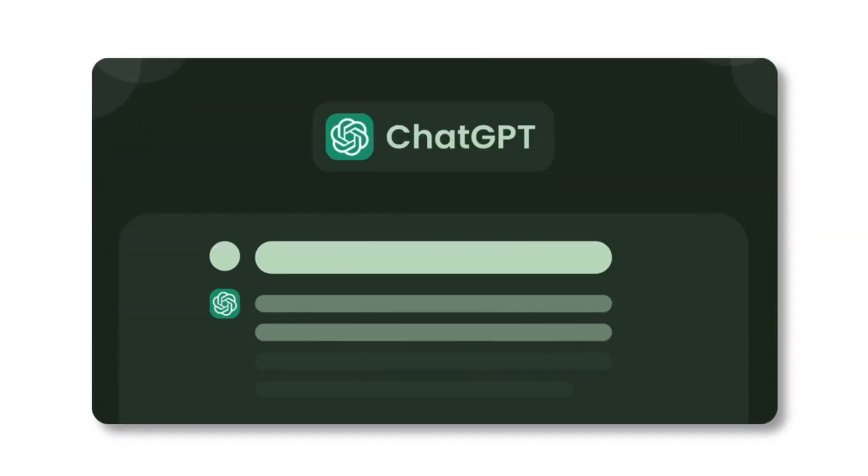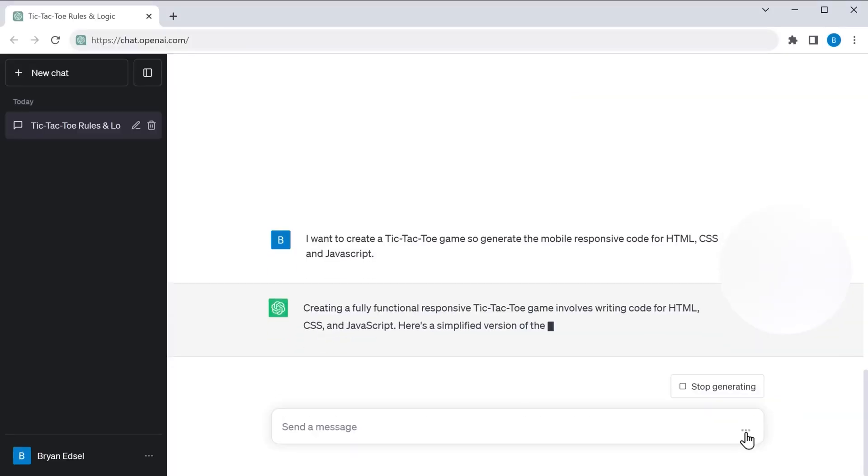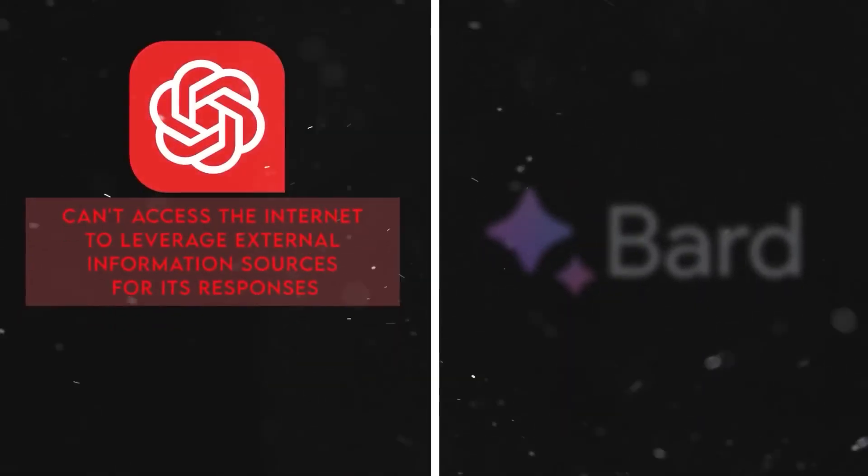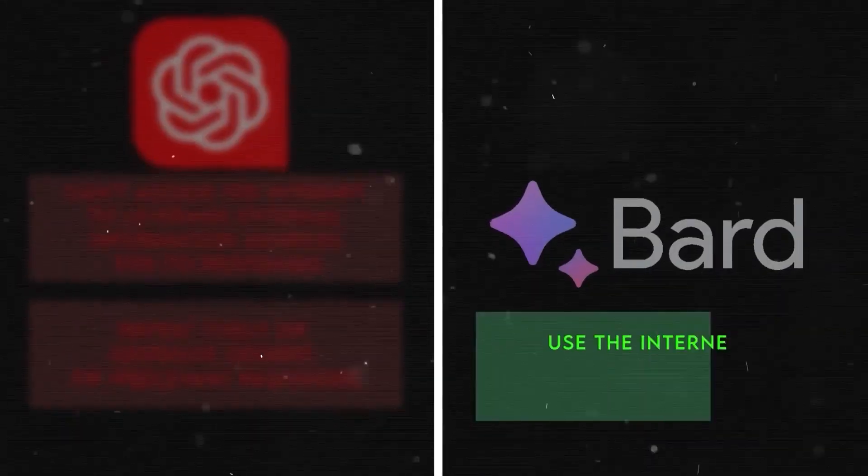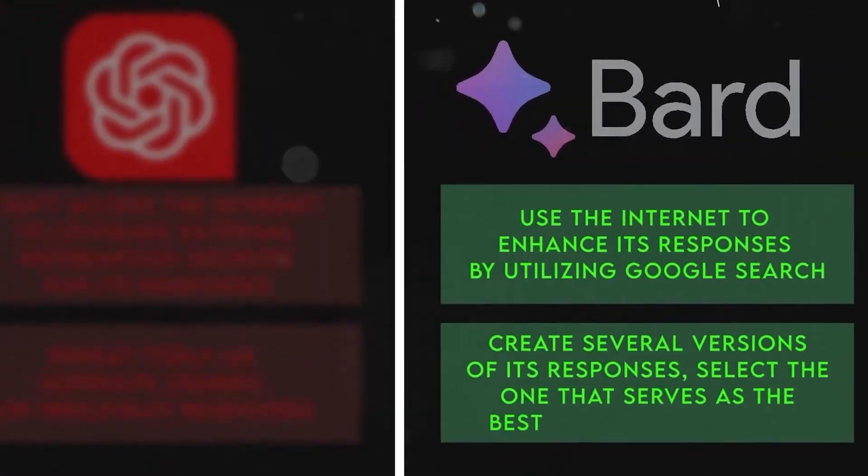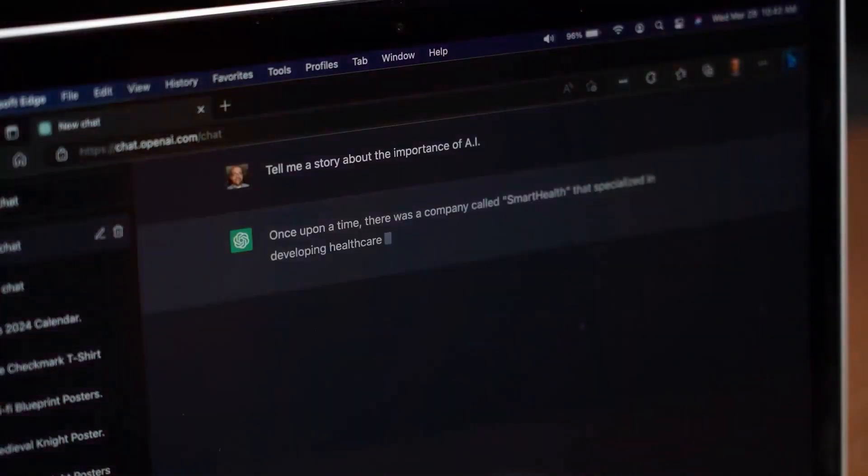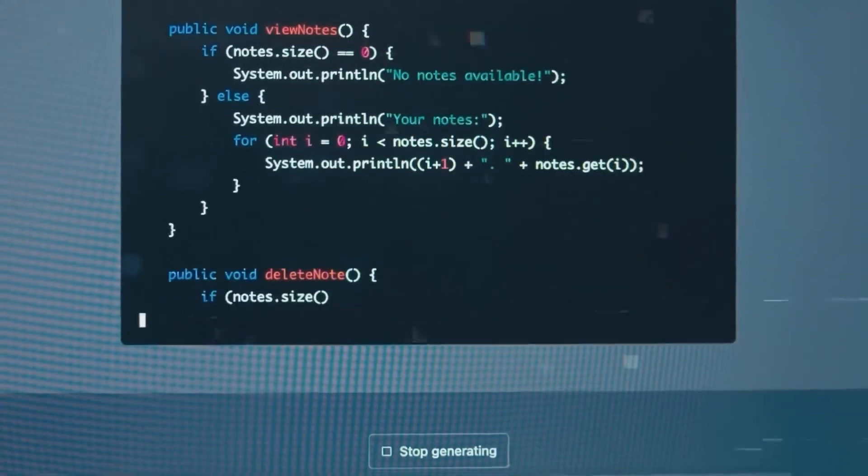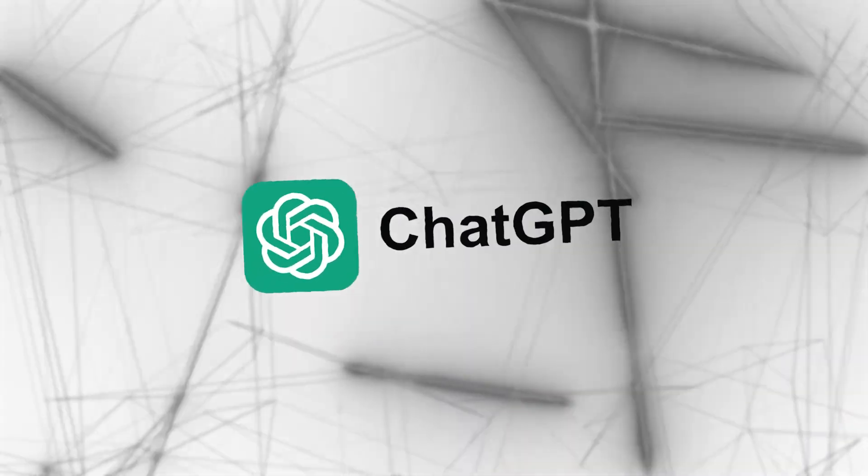Both Bard and ChatGPT are top-tier, each standing tall in its own arena. If you want high-quality info, diverse answers, and a multilingual touch, Bard is your best bet. But if engaging conversations, unique content, and ethical ponderings are what you're after, ChatGPT takes the cake.